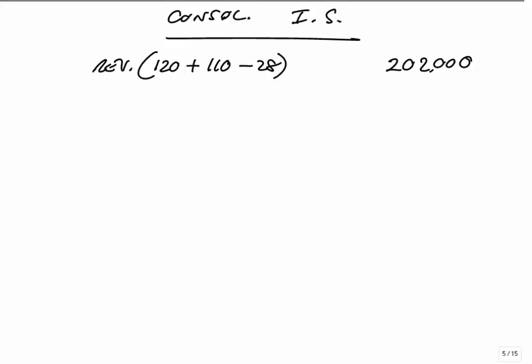The cost of sales: £55,000 in P and £50,000 in S. But included in P's purchases will have been the £28,000 they were charged by S. So take off the £28,000. Don't add up yet — just take off the £28,000.